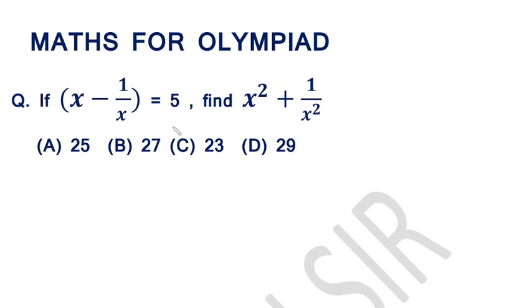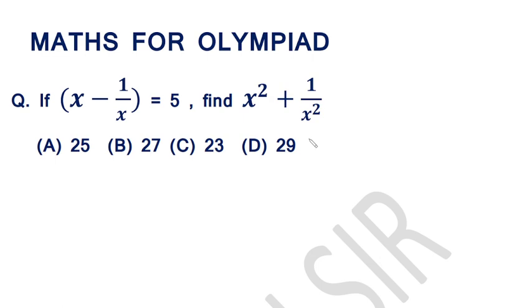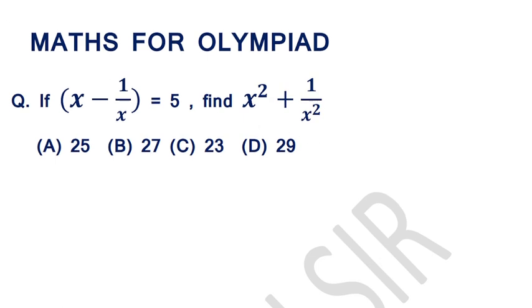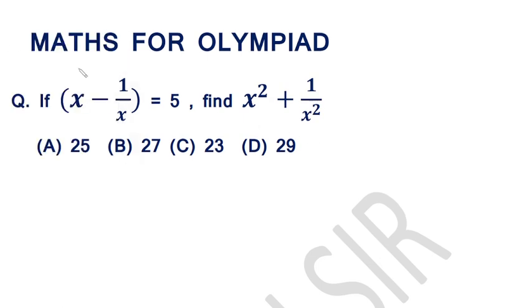Before solving this question, recall this identity. A square plus b square is equal to a minus b whole square plus 2ab.